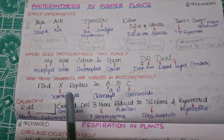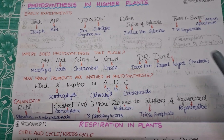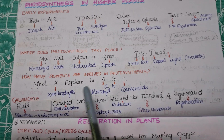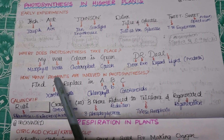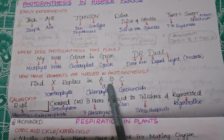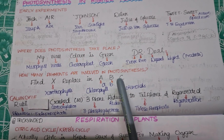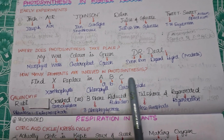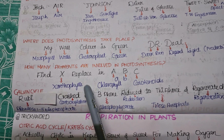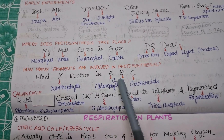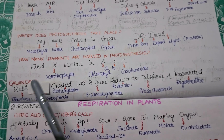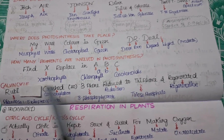The next trick covers how many pigments are involved in photosynthesis: 'Find X and Replace in ABC.' Find X — X is for Xanthophylls. Replace in ABC — A is Chlorophyll A, B is Chlorophyll B, C is Carotenoid. So the pigments involved in photosynthesis are Xanthophylls, Chlorophyll A, Chlorophyll B, and Carotenoids.